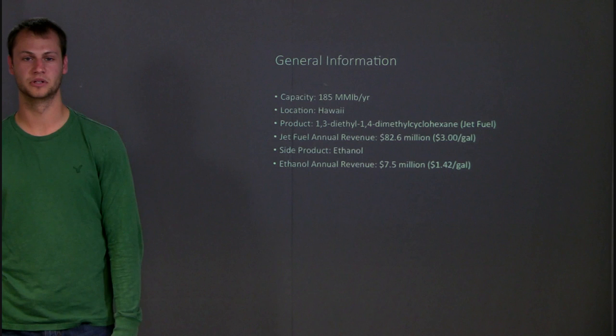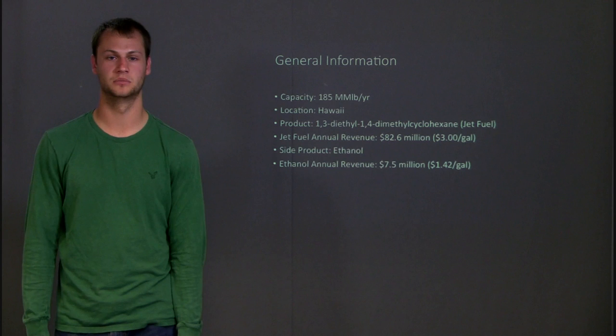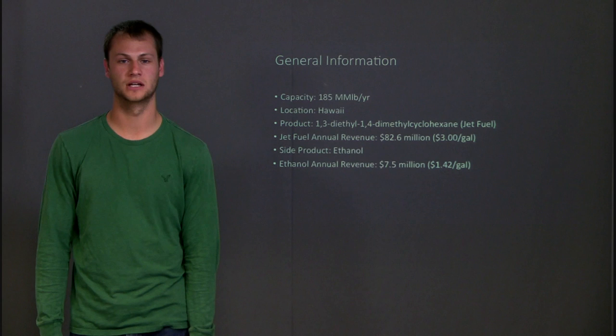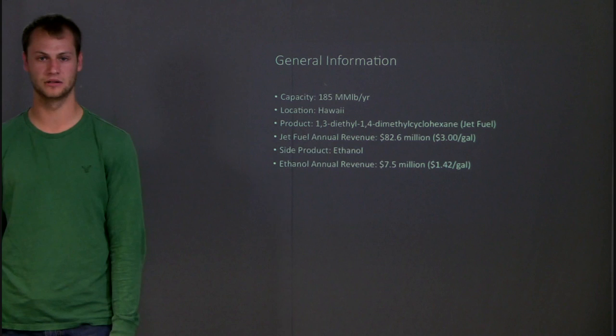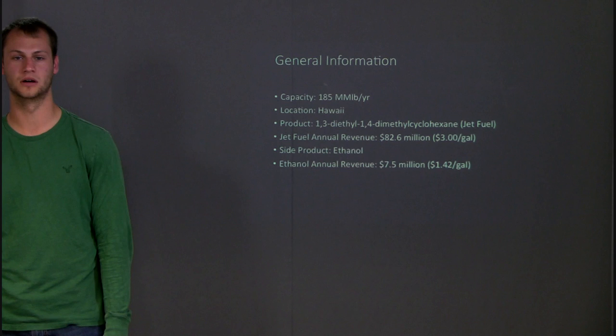Our plant will be located in Hawaii. It is producing 185 million pounds per year of jet fuel, which we plan to make 82.6 million dollars by assuming a sales price of three dollars per gallon, and we can sell an ethanol side product for 7.5 million dollars, selling it at a price of one dollar and 42 cents per gallon.